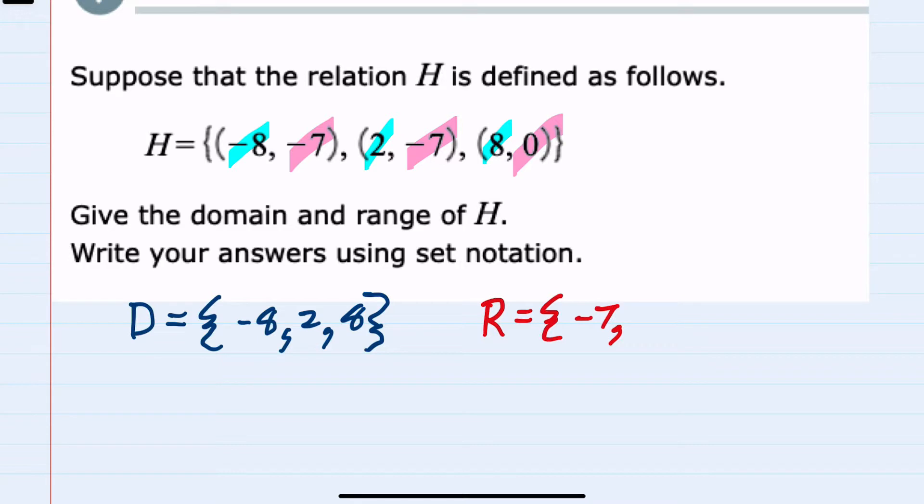So one possible output is minus 7 even though it happens a couple of times. The outputs will either be minus 7 or 0. So again, the domain is all of our possible x's and the range is all of our possible y's.